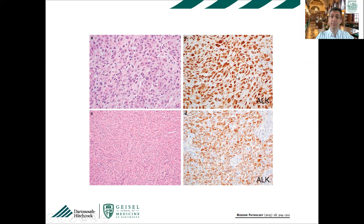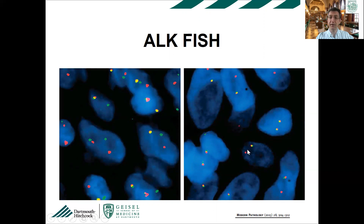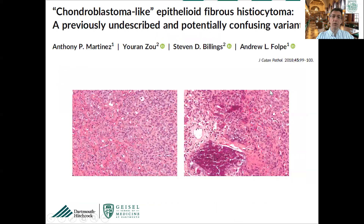Depending on the fusion partner, you can see different patterns of immunohistochemical staining — the same concept seen in inflammatory myofibroblastic tumors or anaplastic lymphoma. The ALK FISH shows the rearrangement: two probes far from each other indicate a balanced translocation, while loss of one color indicates an unbalanced translocation where the centromeric probe was lost. This correlates with true ALK rearrangement leading to ALK protein overexpression.